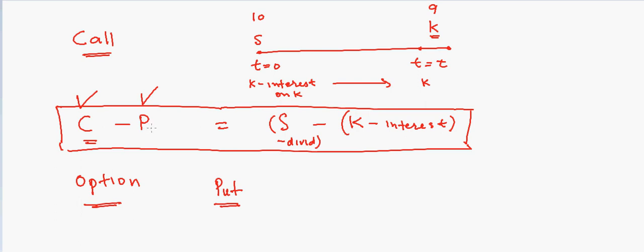If you want to do the same thing for the put option, we can also do this: get call, sell put, and then also sell stock. That will be equal to minus K minus interest. We can also use this relationship to lend money, so we can get interest from combining the call, put, and the stock on certain investments.